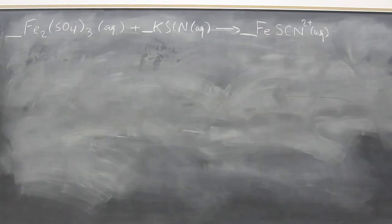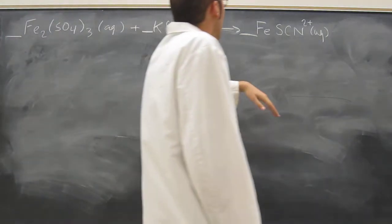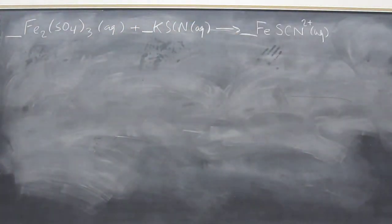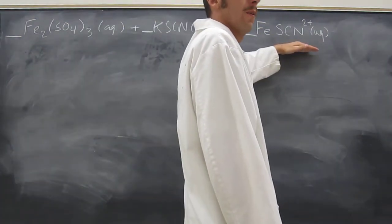Like I was saying, I don't have very much time, so I'll go through this one kind of quick. This is what was given to you in the problem: iron 3 sulfate aqueous is mixed with potassium thiocyanate aqueous to give iron thiocyanate 2 plus. So this is that compound that makes the red color.